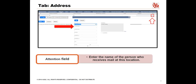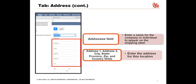5. In the Label field, enter a name for this location. You select this label to use the address on transactions. 6. Click the Edit pencil icon to launch a pop-up window from where you can edit the address fields. 7. In the Attention field, enter the name of the person who receives the mail at this location. 8. In the Addressee field, enter a name for the company or individual to appear on the shipping label. 9. In the Phone field, enter a number where the person receiving this mail can be reached.